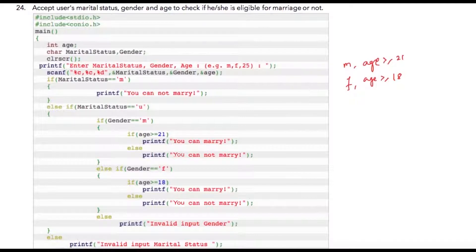So let us apply this condition in the program. I'm taking age as an integer number and marital status and gender as character variables. While asking user age inputs, we are taking percent c for character variables and percent d for integer variables.